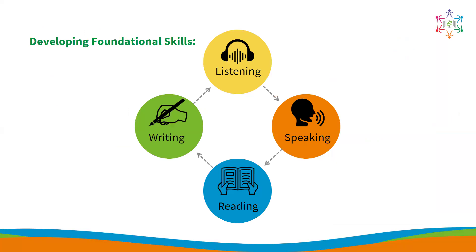To effectively teach English, especially to beginners in rural areas, it's crucial to develop their foundational skills in the four core areas: listening, writing, speaking, and reading. Listening is the cornerstone of language acquisition for beginners — focus on familiarizing them with the sounds and rhythm of English. Start with simple listening exercises; play short, clear audio clips of everyday conversations such as greetings or simple instructions. After playing the clip, ask students to identify keywords or phrases they heard — for example, 'I am going to play a conversation about buying a fruit; listen carefully and tell me which fruits are mentioned.'